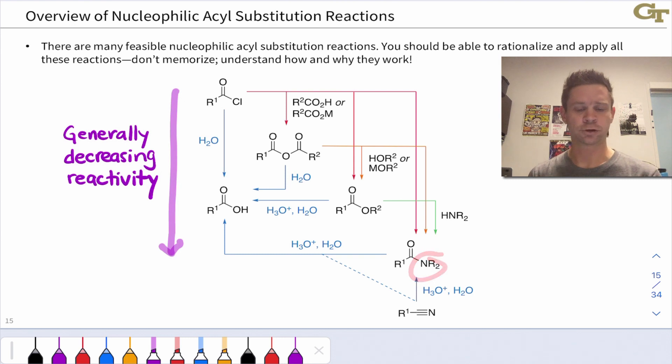At the very bottom is the NR2 group, which is a terrible leaving group, right? And the carboxylic acid as well has a really bad leaving group in OH- right here linked to the carbonyl carbon. So generally we can move down this map spontaneously, and this is an important thing to keep in mind because we're going from highly reactive, great leaving groups at the top of the map to terrible leaving groups at the bottom.